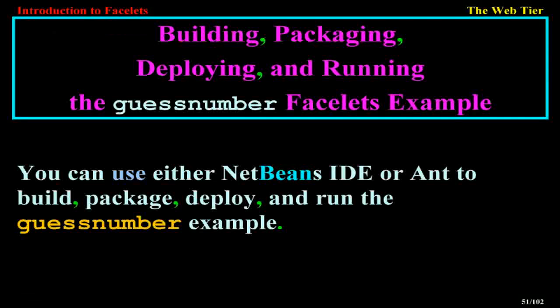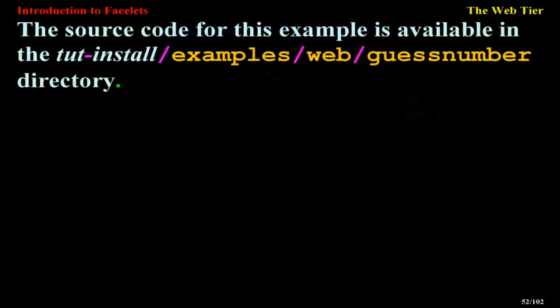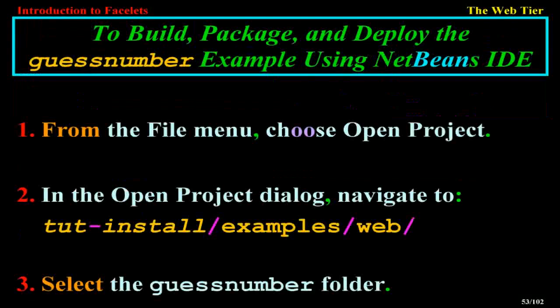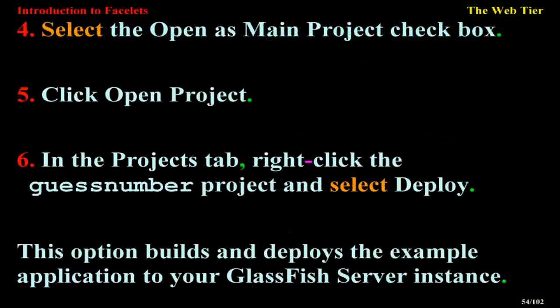Building, packaging, deploying, and running the guess number Facelets example. You can use either NetBeans IDE or Ant to build, package, deploy, and run the example. The source code is available in the tut-install/examples/web/guessnumber directory. To build, package, and deploy using NetBeans IDE: from the File menu choose Open Project, navigate to tut-install/examples/web, select the guessnumber folder, select Open as Main Project, click Open Project, then right-click the project and select Deploy to build and deploy to your GlassFish server instance.